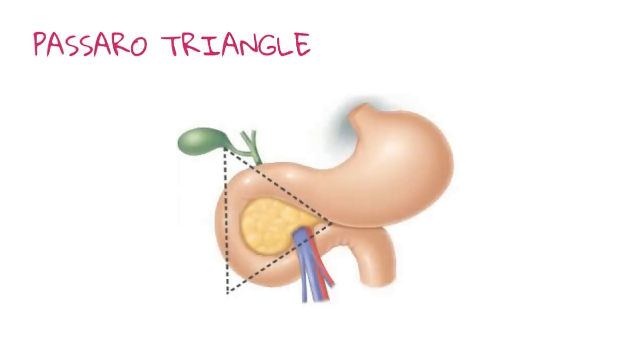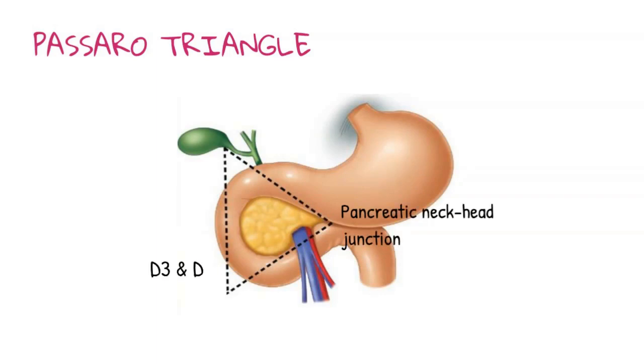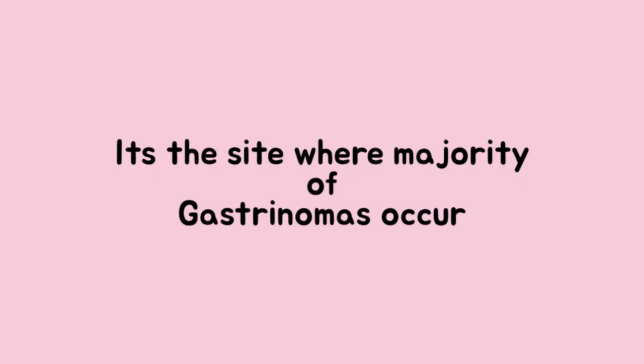Next is Passaro's triangle, formed by joining three points: the pancreatic head and neck junction, the D3 and D4 junction, and the cystic duct and CBD junction. It is the major site of occurrence of gastrinomas.